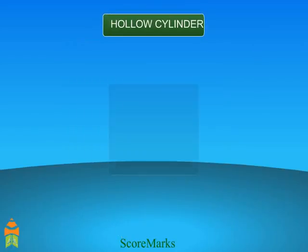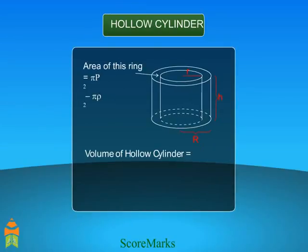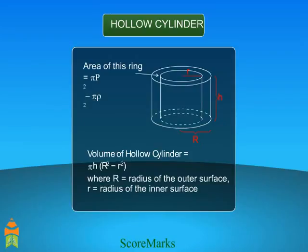Sometimes you need to calculate the volume of a hollow cylinder or tube. Volume of a hollow cylinder equals πh(R² - r²), where capital R is the radius of the outer surface and r is the radius of the inner surface.